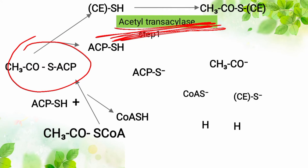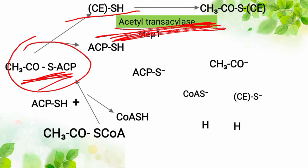The acetyl-ACP that was generated — we've given it to ACP. Remember, ACP is mobile and has a hand. Now ACP wants to go and carry malonyl-CoA, but it is holding the acetyl group, so there is no space — it only has one hand. So ACP gives the acetyl group to the condensing enzyme to hold, since the condensing enzyme also has a hand and is the one that catalyzes the third step.